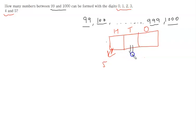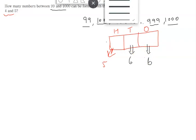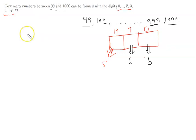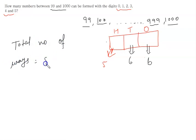For the tens place, there is no restriction, so we can write any of the 6 digits — that gives 6 ways. Similarly, for the ones place we have 6 ways. Applying the multiplication principle, the total number of ways equals 5 × 6 × 6 = 180. So 180 is the correct answer.